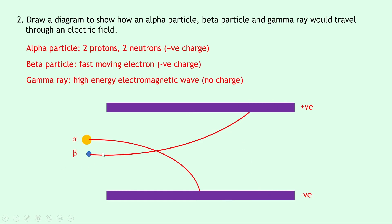Now notice that I've drawn the beta particle to travel further through the electric field than the alpha particle and that means the beta particle is being deflected less and that is due to the charge in the beta particle being smaller than the charge in the alpha particle.